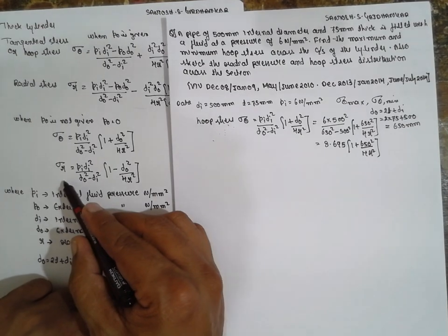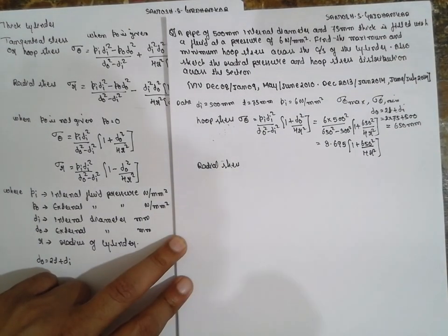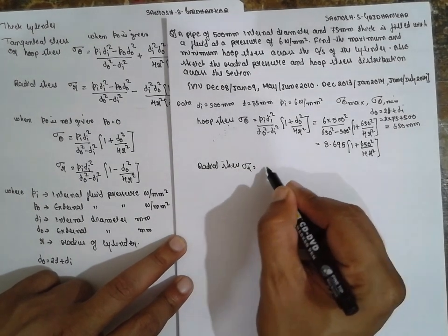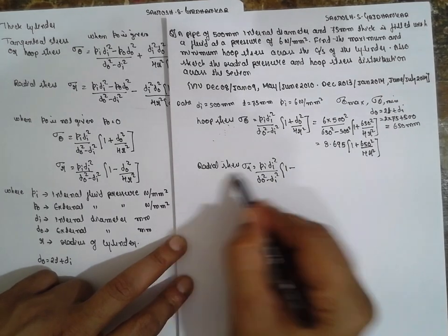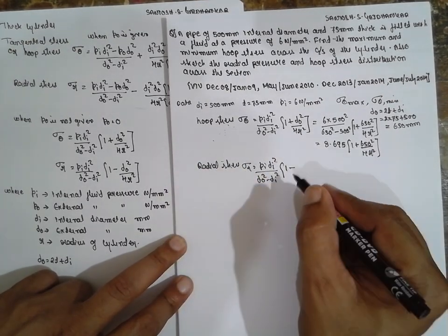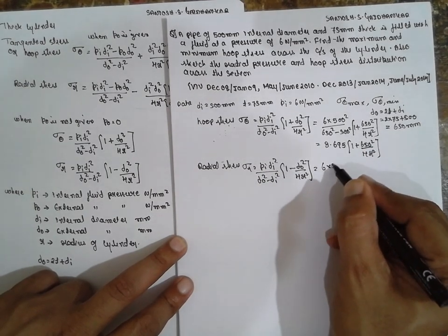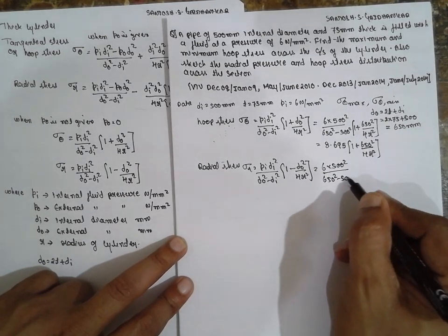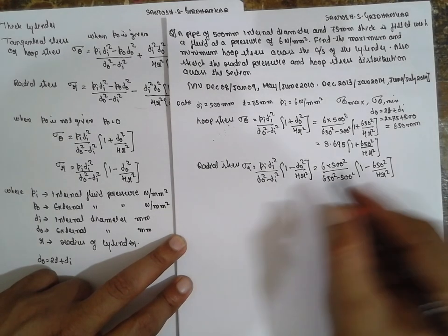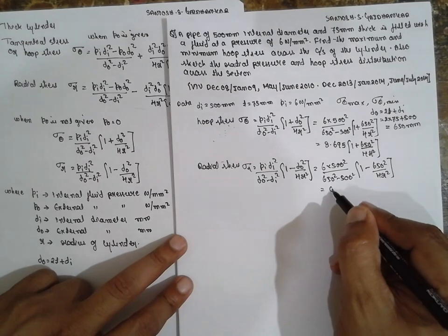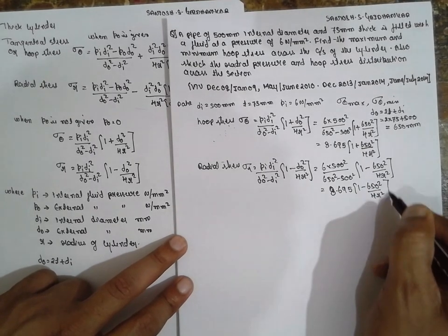Now I will go for radial stress. This is the radial stress formula — I am directly using it here. I will derive this formula in the next videos. Sigma r = Pi × Di² / (D0² − Di²) × (1 − D0² / (4R²)). Substitute the values: 6 × 500² / (650² − 500²) × (1 − 650² / (4R²)). The value will be 8.695 × (1 − 650² / (4R²)). We have to find out this R term.